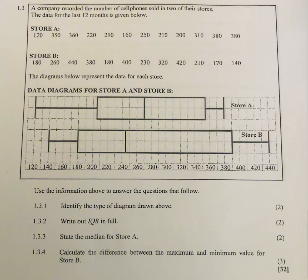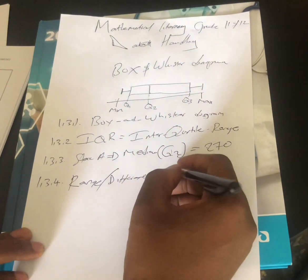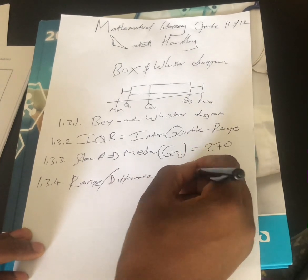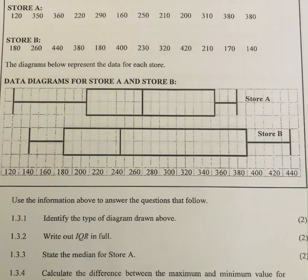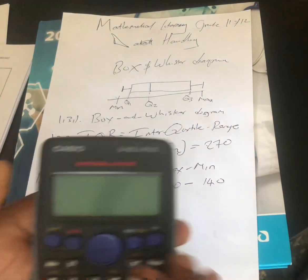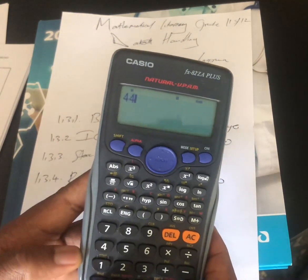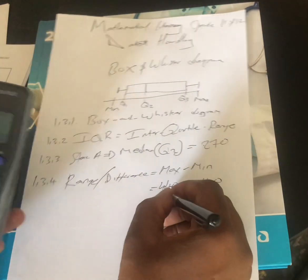Question 1.3.4 says: calculate the difference between the maximum and minimum value for Store B. The difference is the same as calculating the range. Range equals max minus min for Store B. The maximum is 440 and the minimum is 140, so 440 minus 140 equals 300. The answer is 300.